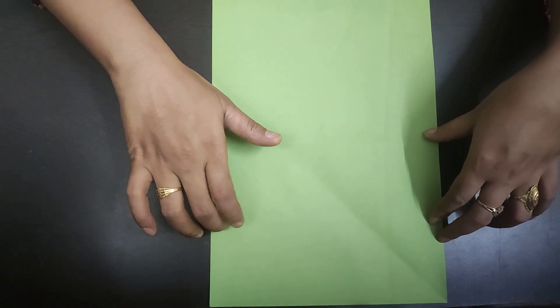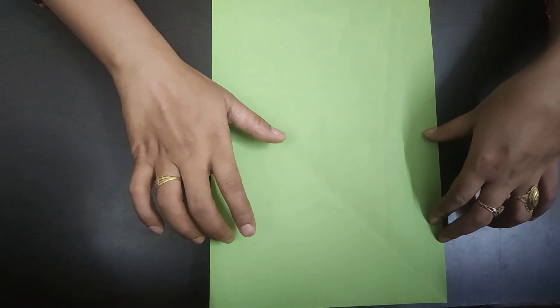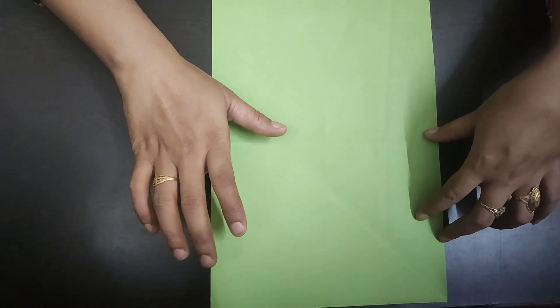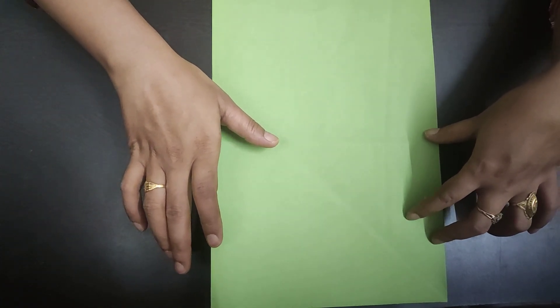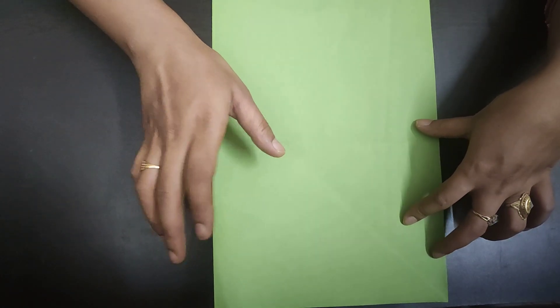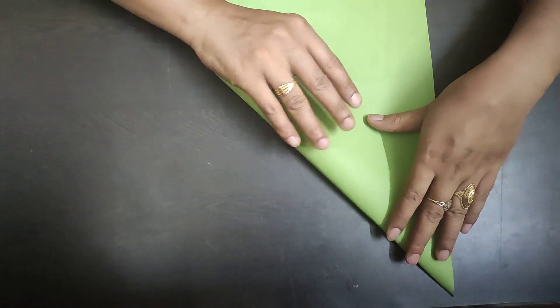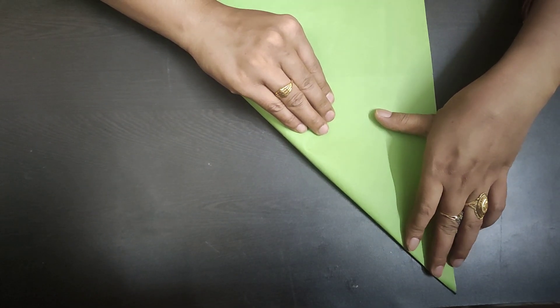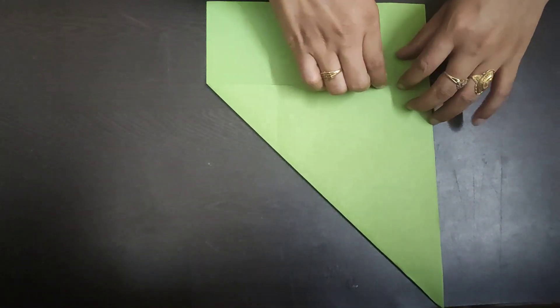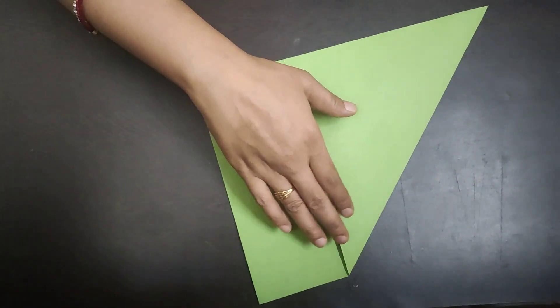First of all, take this green sheet. If you do not have green sheet, you can use any color or you can use old newspaper or magazine sheet. First fold this paper into equal size triangle, press it and cut this part with the help of scissor.